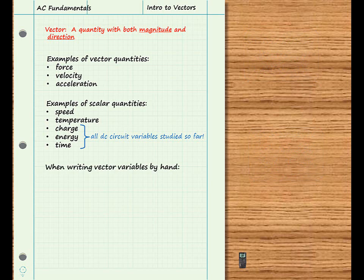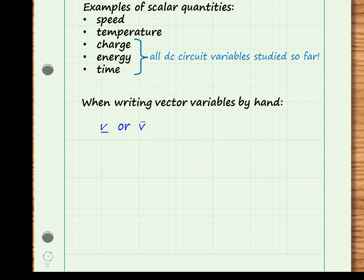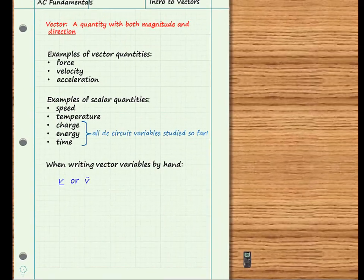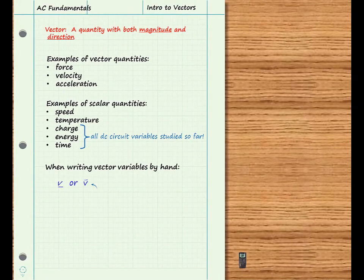The first one is to simply underline the variable name, as shown here. And another method is to use an arrow on top, like this. The arrow is a half arrow, which we call a harpoon. So this is a harpoon to the right, and this is the convention that we will use in this series.